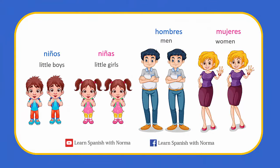Now let's see the plural form of these nouns. The Spanish word for little boys is niños; little girls is niñas; men is hombres; and women is mujeres. Let's add the English definite articles for plural nouns — that's pretty easy, right? In Spanish, the definite article used with masculine plural nouns is los. So we have: los niños and los hombres. The definite article used with feminine plural nouns is las. So we have: las niñas and las mujeres.